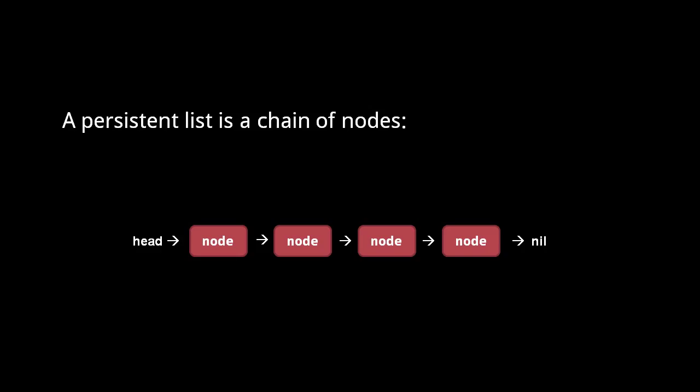The simplest collection type is the list, which is implemented as a singly linked list. Each element of a list is stored in a node with a link to another node, such that a list is a chain of nodes. A list object references the first element node, the so-called head node, and the last element node breaks the chain by having a nil reference.